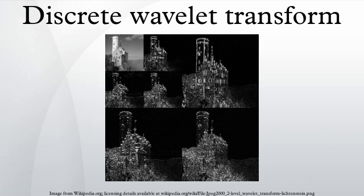Decomposing the sequence with respect to these bases yields the following: The DWT demonstrates localization — the first term gives the average signal value, the next places the signal in the left side of the domain, and the next places it at the left side of the left side; truncating at any stage yields a downsampled version of the signal. The DFT, by contrast, expresses the sequence by the interference of waves of various frequencies, so truncating the series yields a low-pass filtered version of the series.